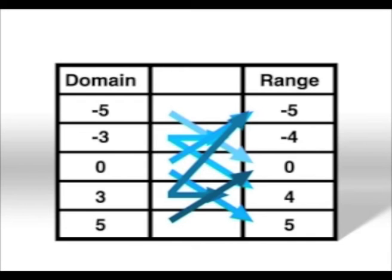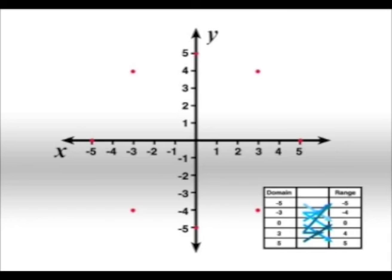Well, here we have the points from the fourth relation plotted on a set of axes. That doesn't look right to me. See, for some values in the domain, for example, x equals negative five, there is only one y-value that corresponds.